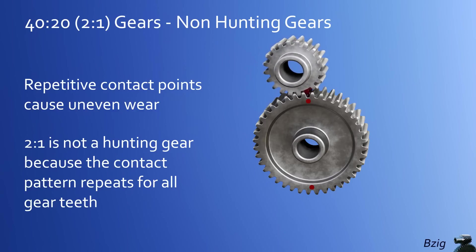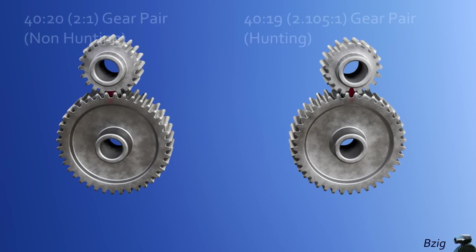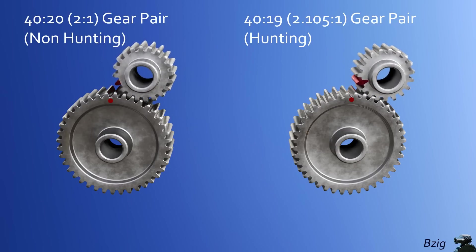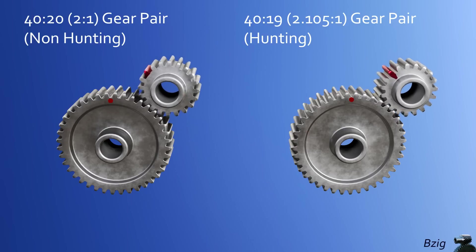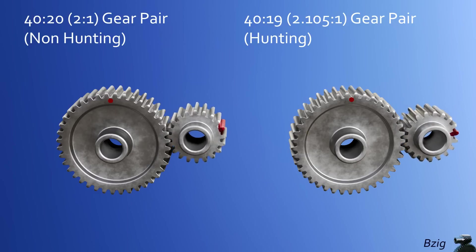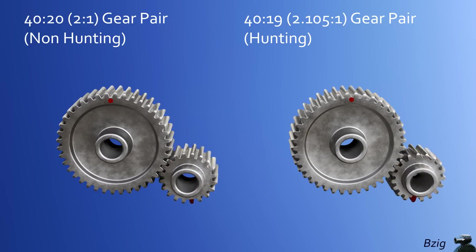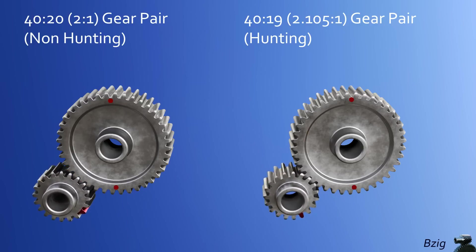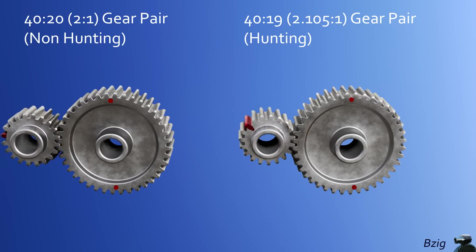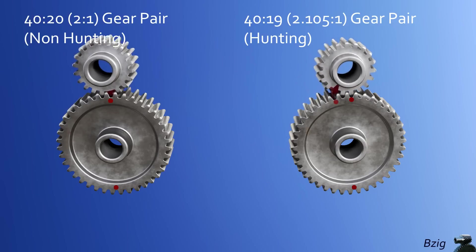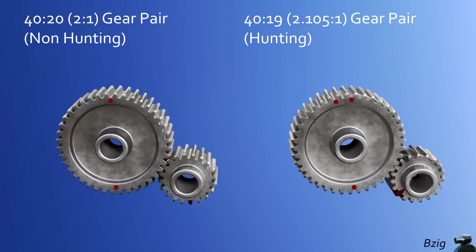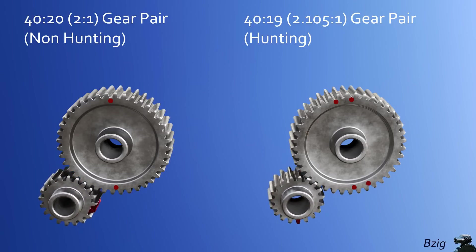To make our first hunting tooth gear pair, we'll use a prime number gear. So now the gear pair on the left is our same non-hunting 40-to-20 or 2-to-1 gear set. But in the gear pair on the right, I swapped the 20-tooth gear with a 19-tooth gear. So the right side is a 40-to-19 gear pair. Instead of a 2-to-1 reduction, the gears on the right now have a 2.105-to-1 reduction. And watching the red tooth on the 19-tooth gear, we see it's no longer limited to just two mesh points on the 40-tooth gear.